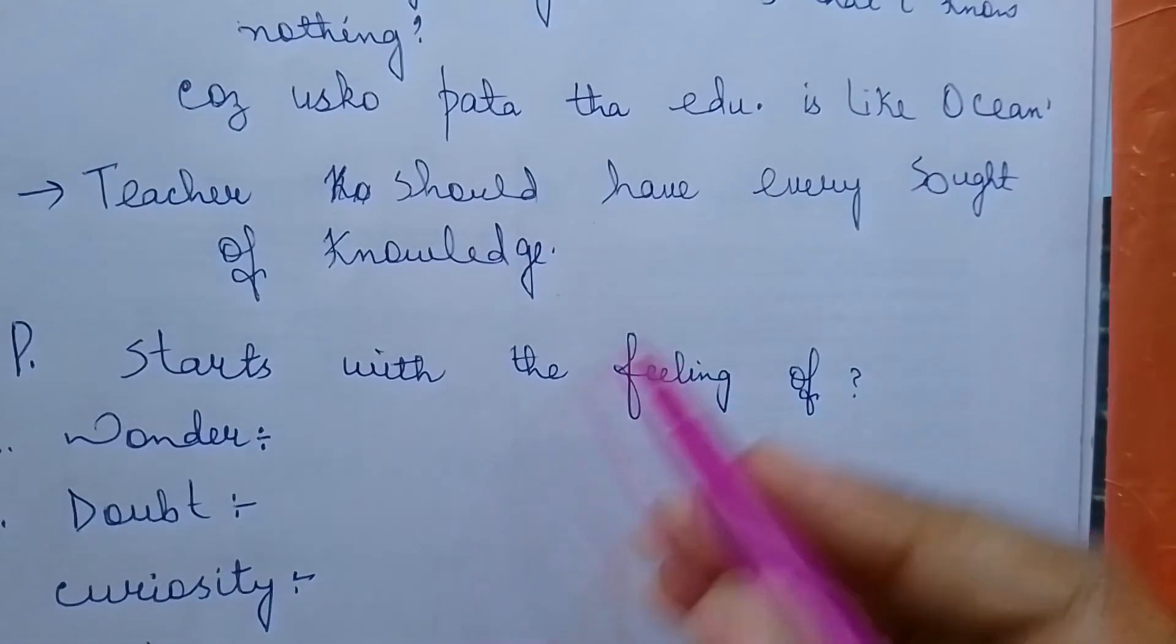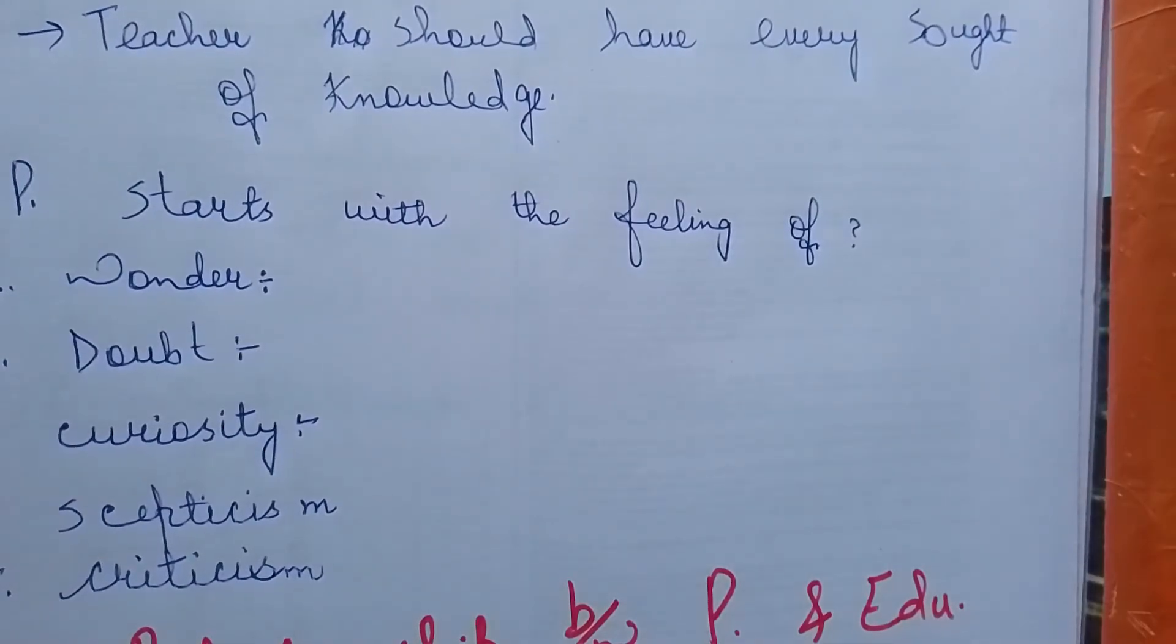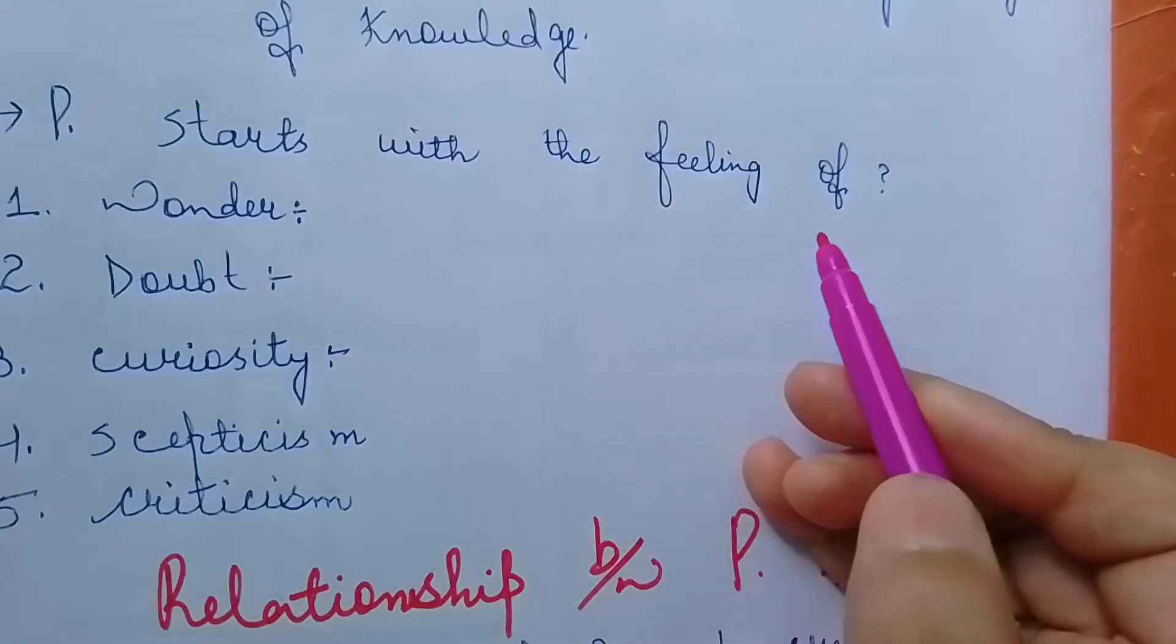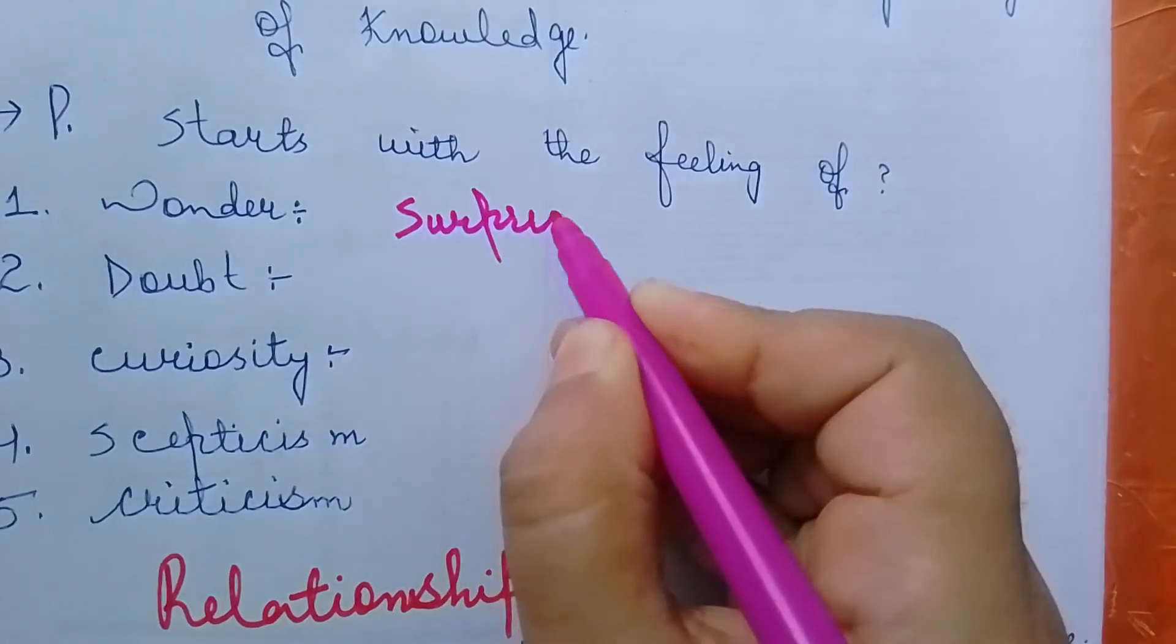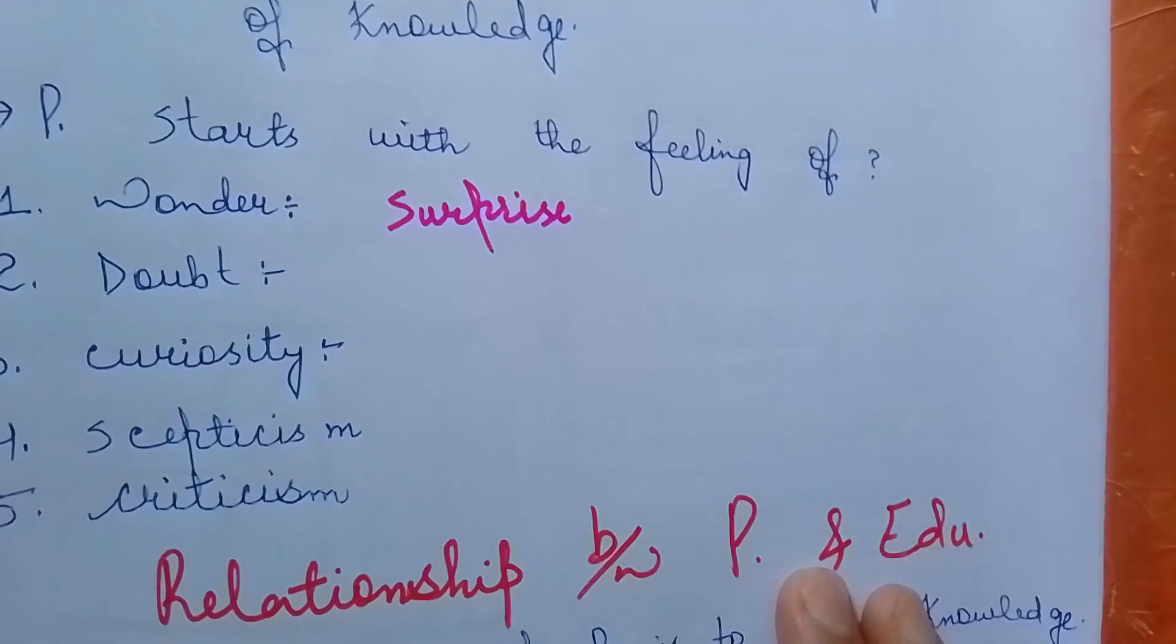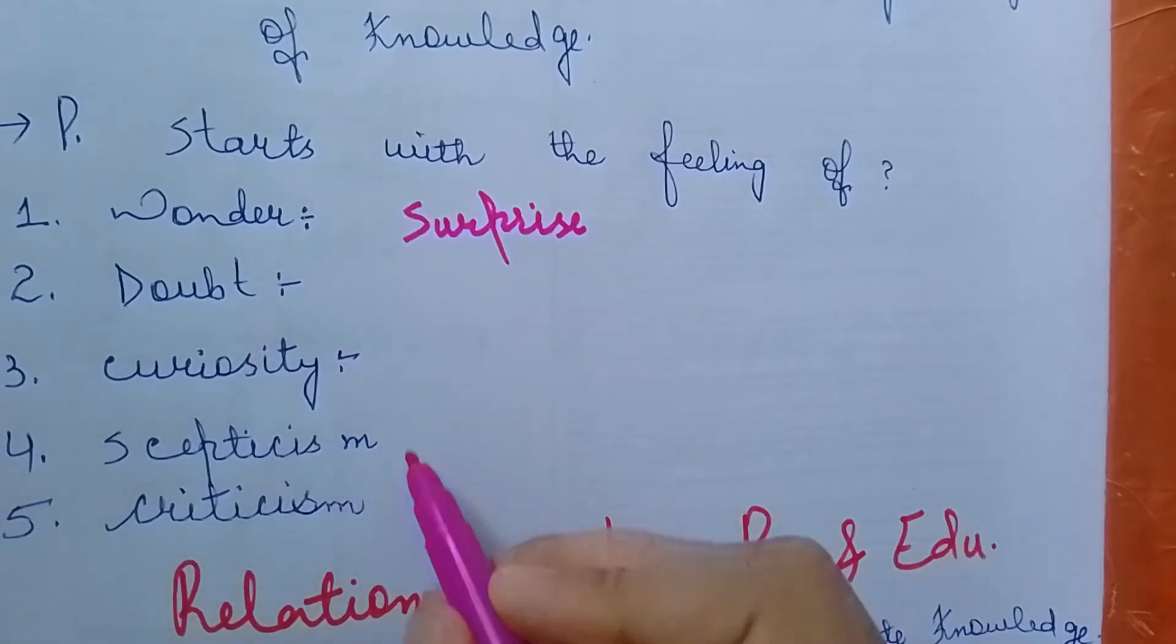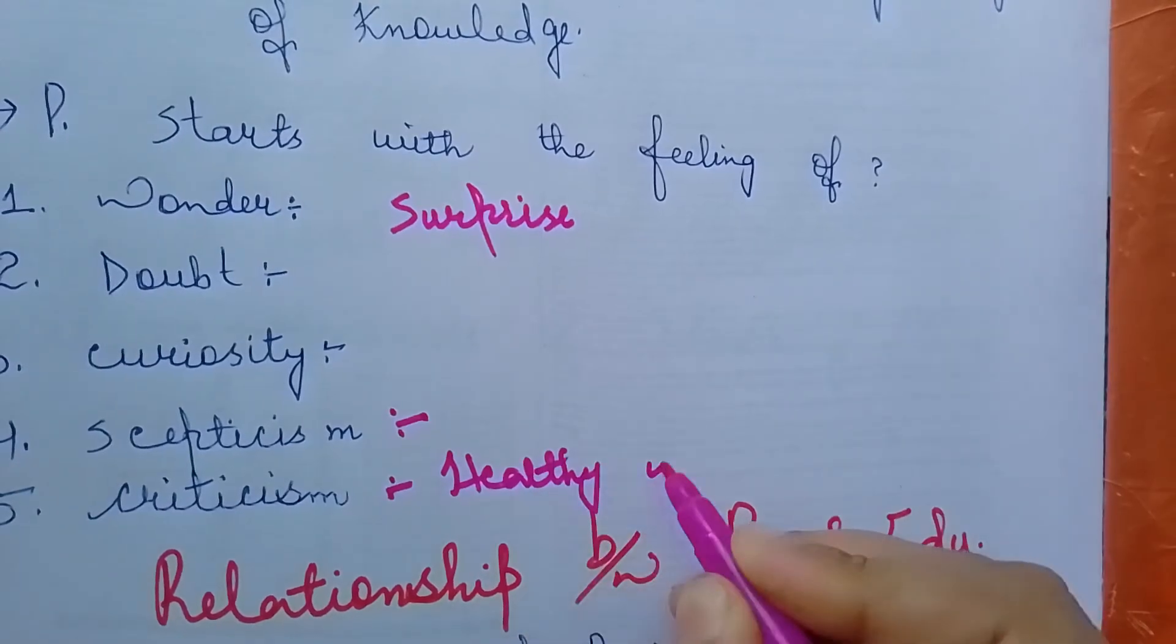Teachers should have every sort of knowledge. A teacher should have every kind of knowledge. If he knows one topic, he shouldn't say he knows everything. He should always have curiosity so that he can handle every kind of student. Philosophy starts with the feeling of wonder, doubt, curiosity, skepticism, and criticism - when a person is surprised about how something happened, that's where philosophy starts. Healthy criticism should be there, not negative.